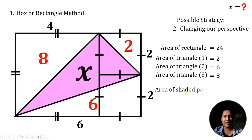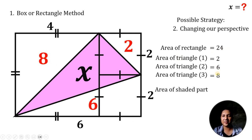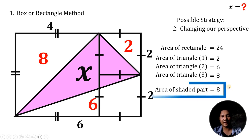At this point, we can now find the area of the shaded part. We take the area of the whole rectangle, 24, and subtract the areas of the three right triangles: 24 minus 2, minus 6, minus 8. We get a value of 8. Therefore, the area of this shaded part must be equal to 8 square units. This concludes the box or rectangle method.